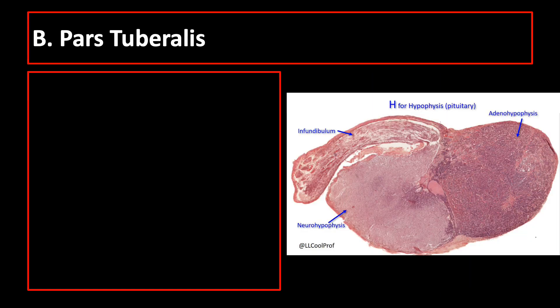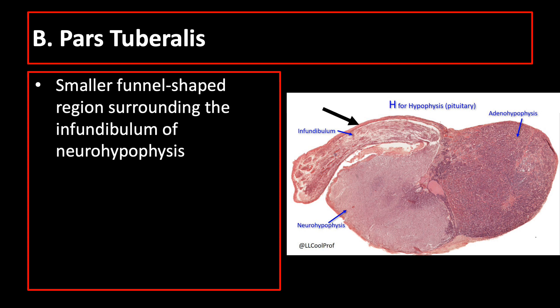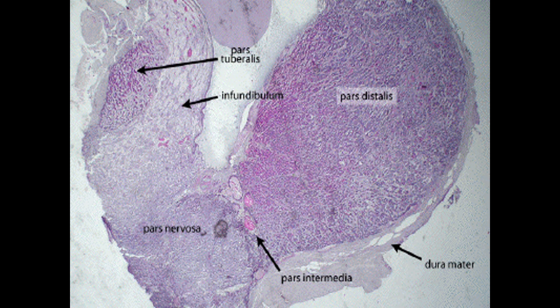The pars tuberalis is a smaller funnel-shaped region surrounding the infundibulum. Look for the infundibulum — the gland enclosing it is the pars tuberalis. Most cells found in the pars tuberalis are gonadotropes, which produce luteinizing hormone and follicle-stimulating hormone. In this picture, the pars distalis and pars tuberalis surrounding the infundibulum can be identified.